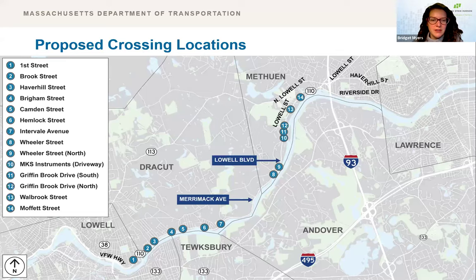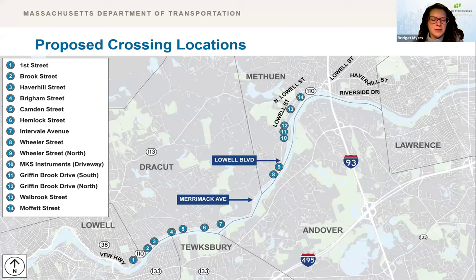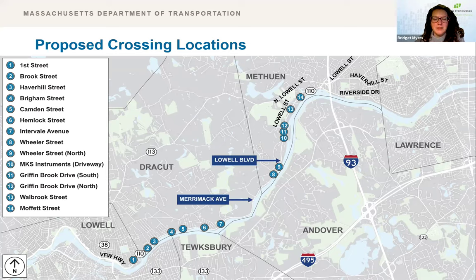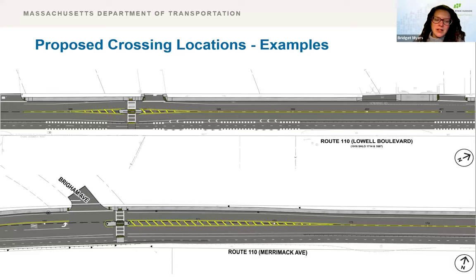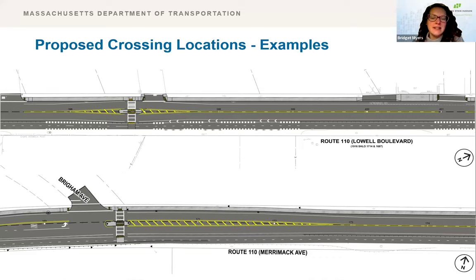This map shows the new potential crossing locations being evaluated. The two at Griffin Brook Drive are signalized, but the remainder would likely be two-stage crossings. Some were selected because we already had a proposed painted median where there was an existing left turn lane — that painted median was turned into a raised median. Others were based on public feedback, and some are based on potential bus stop locations being looked at by Merrimack Valley Transit. The final locations and treatments will be determined as we move to the next design submittal. The crossings can also help with traffic calming by forcing drivers to make a slight change in driving path.